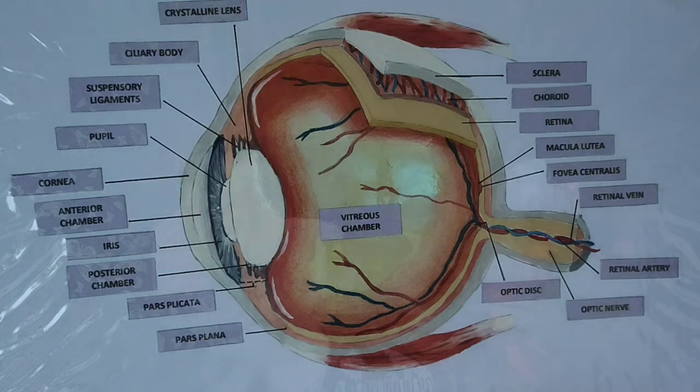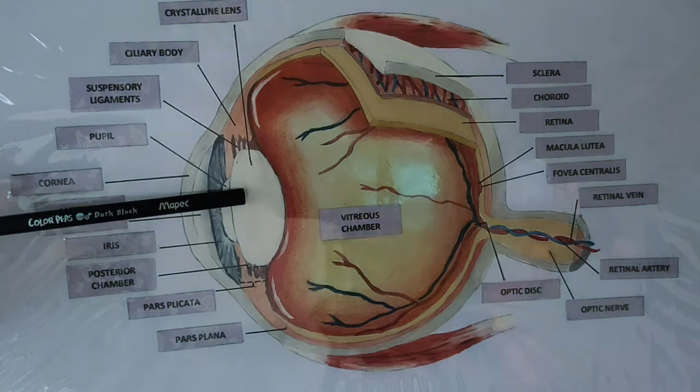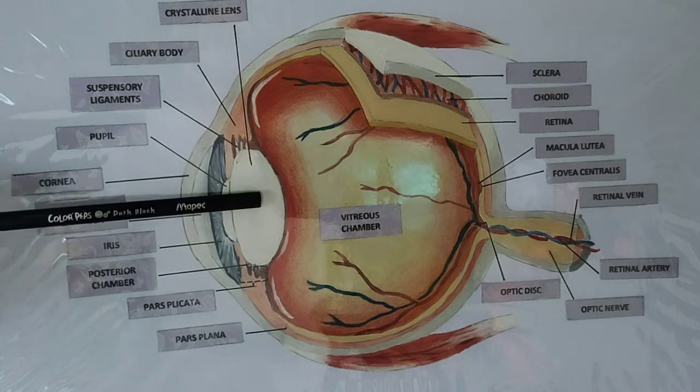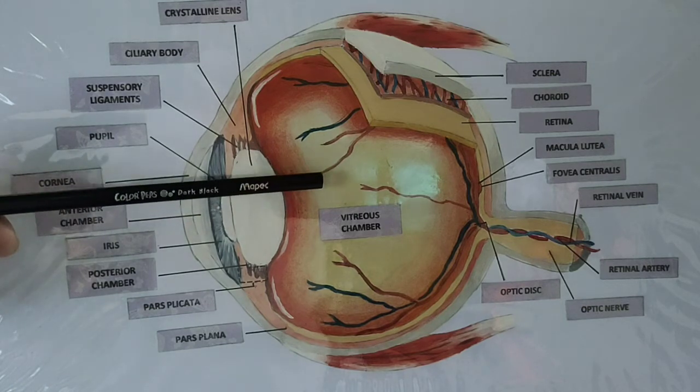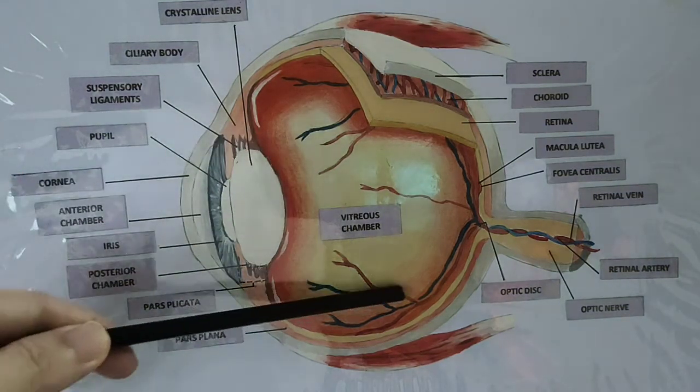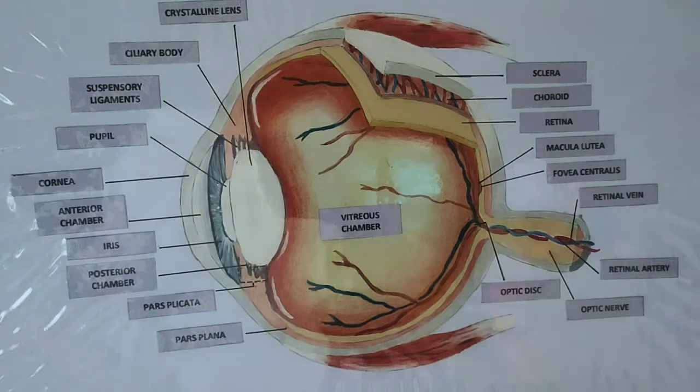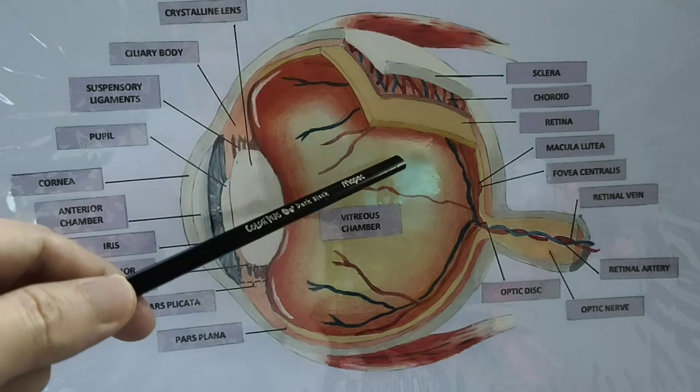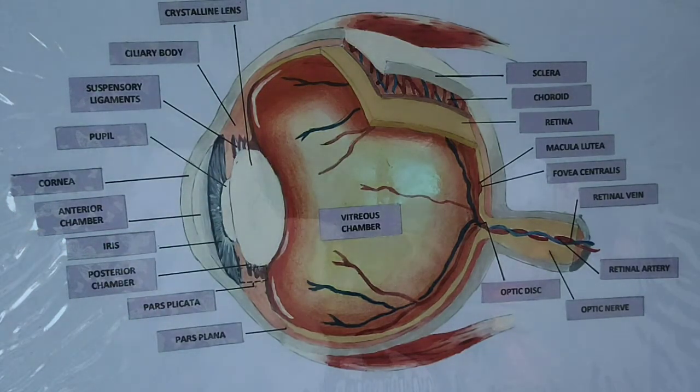The eye accommodates so that we can see clearly those small things or stuff at near. After that, the light would go through it because this one is transparent. It allows light to go through it. After it is being refracted, it will go into this area here we call the vitreous cavity.